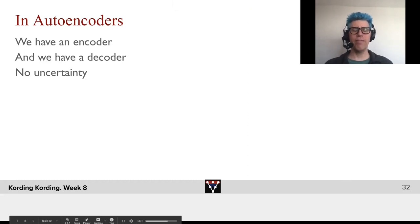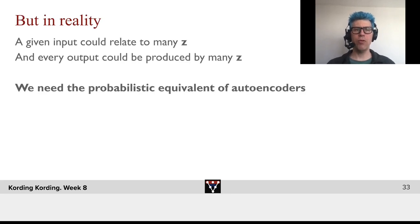So in autoencoders, we have an encoder and a decoder, and we have no uncertainty. But in reality, a given input could relate to many z, and every output could be produced by many z.